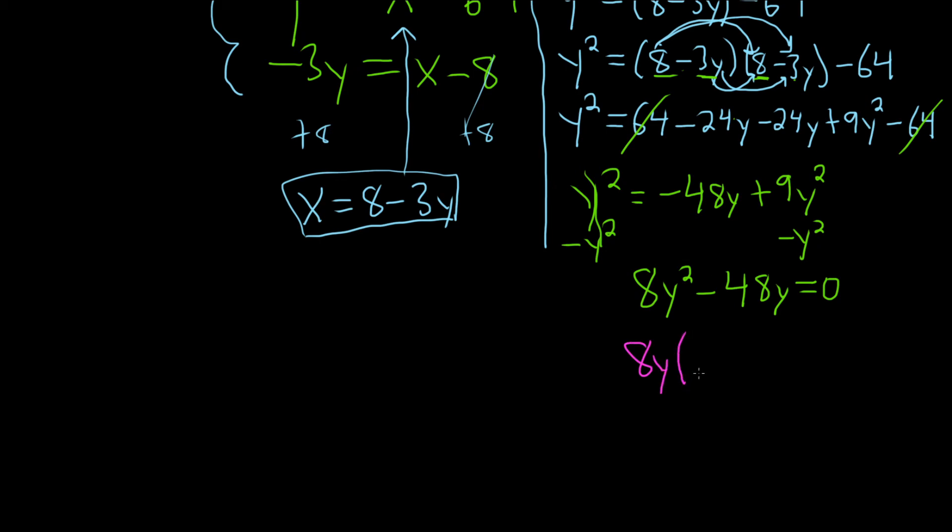And then it looks like we'll need a y here minus 6, right? Because 6 times 8y is 48y. This gives us two possible answers. It gives us y equals 0 and y equals 6. So these are y values. This is not the answer.